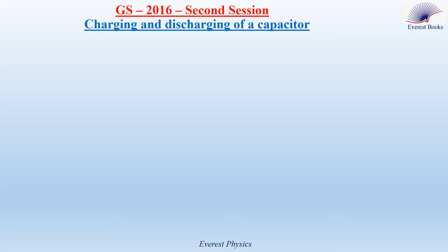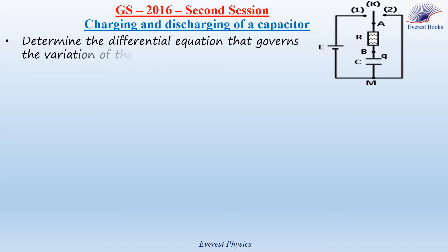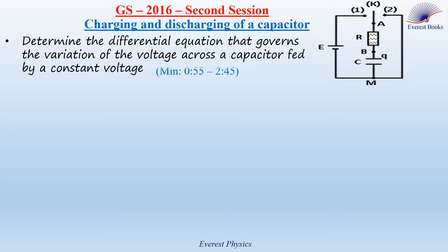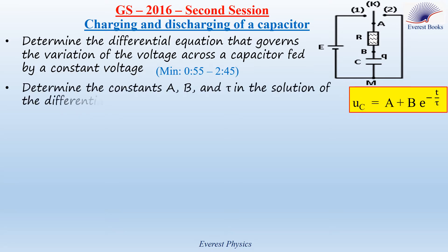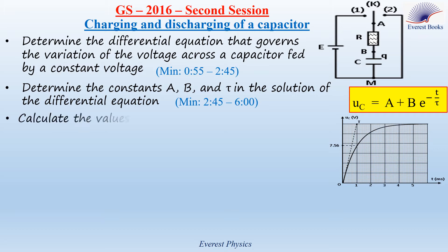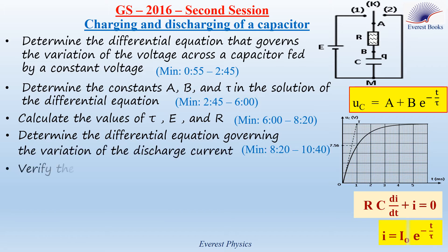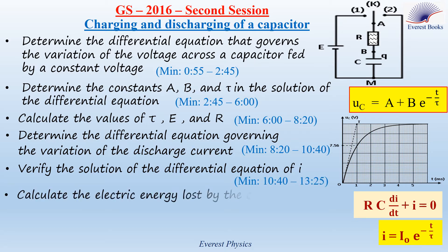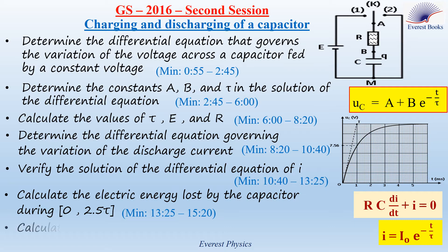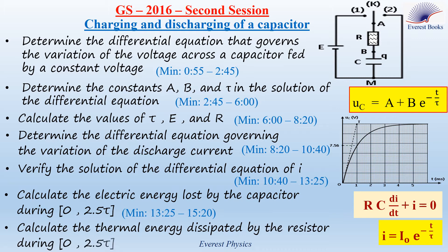In this solved official exam question, we are going to: determine the differential equation that governs the variation of the voltage across a capacitor fed by a constant voltage; determine the constants a, b, and tau in the solution of the differential equation; calculate the values of tau, E, and R; determine the differential equation governing the variation of the discharge current; verify the solution of the differential equation of the current; calculate the electric energy lost by the capacitor during the time interval 0 to 2.5 tau; and calculate the thermal energy dissipated by the resistor during the same time interval.